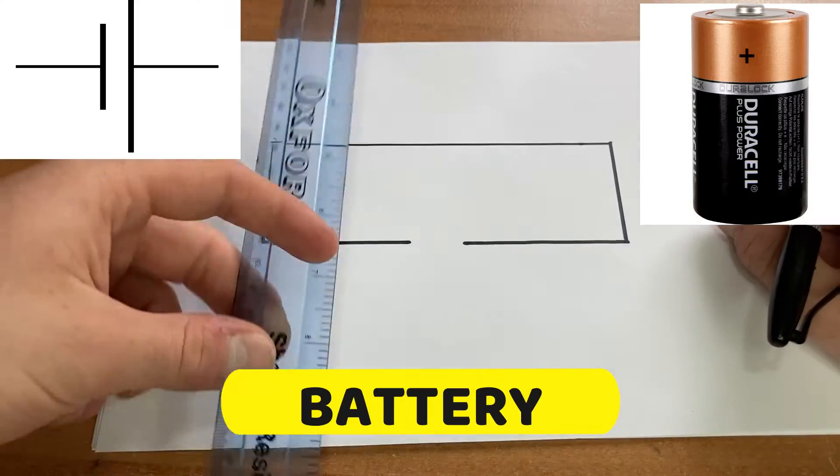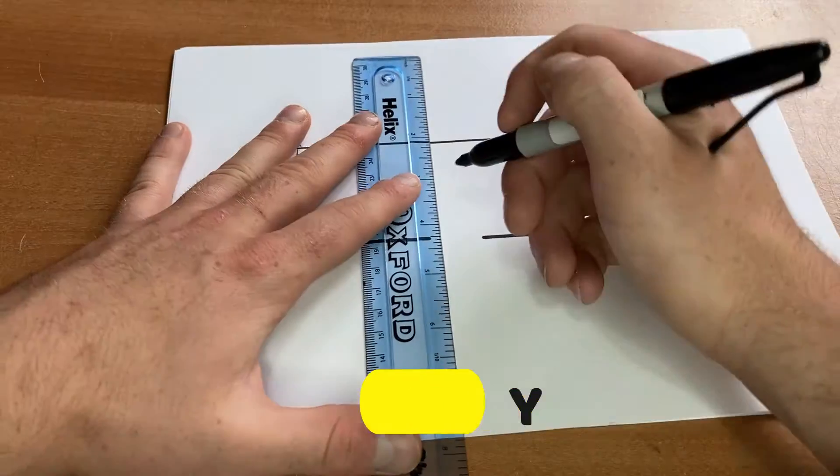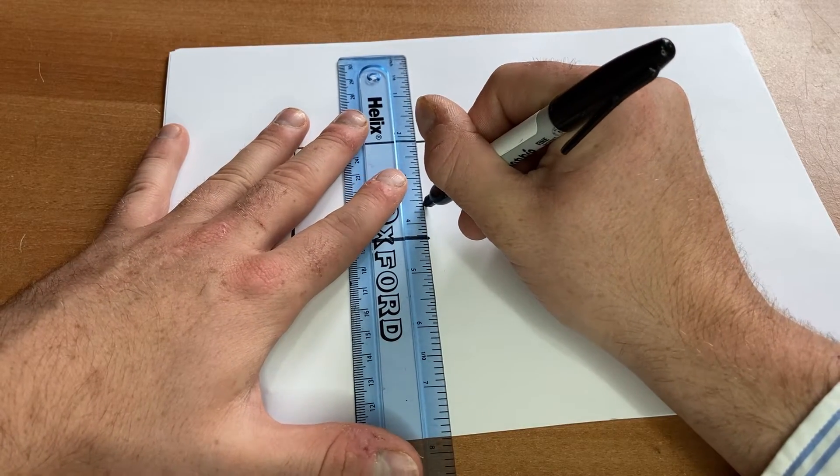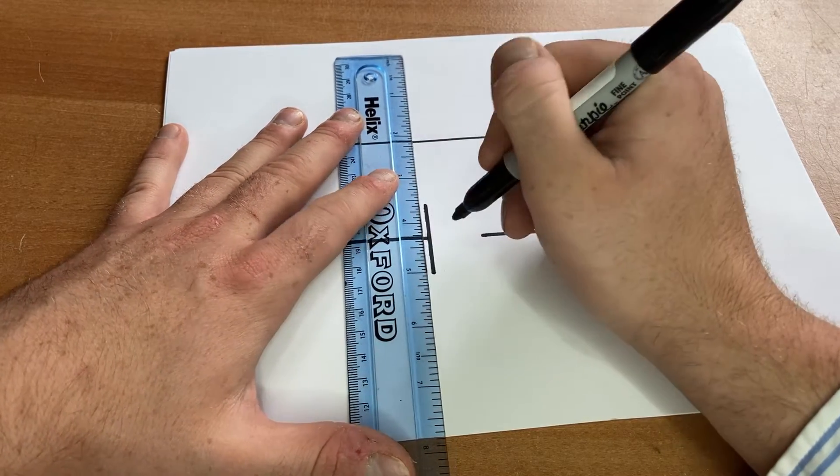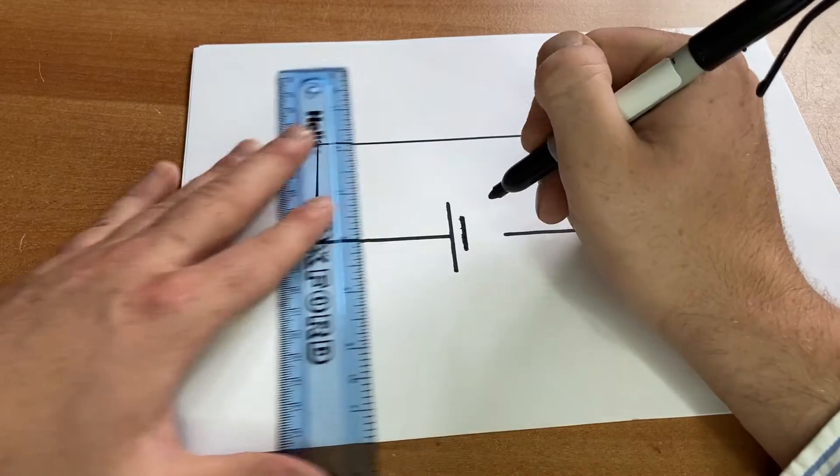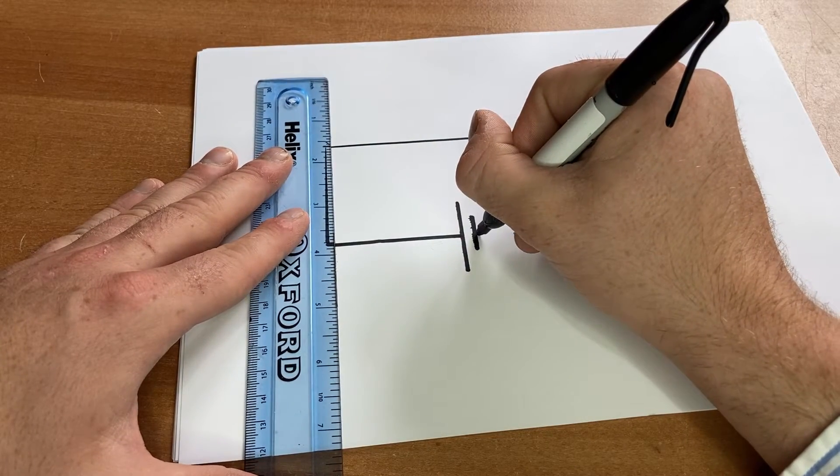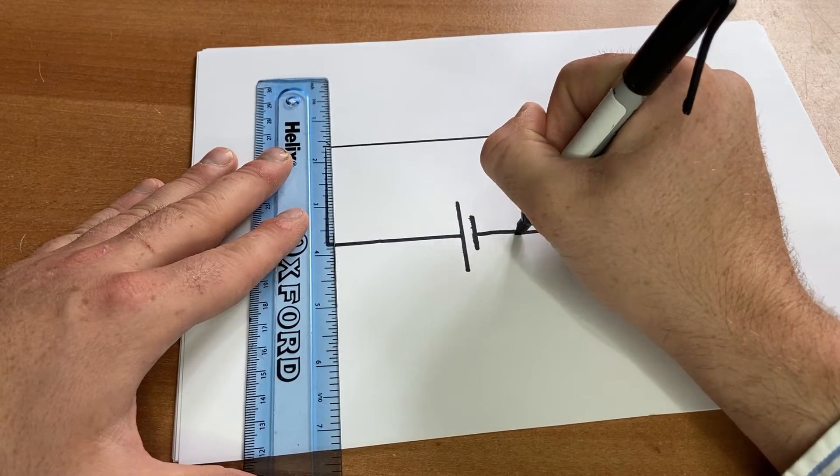Next up we've got the battery. Battery's pretty simple. It's just two lines. Just make sure that you draw one of the lines bigger than the other. Make sure it doesn't actually touch it. And there's my battery.